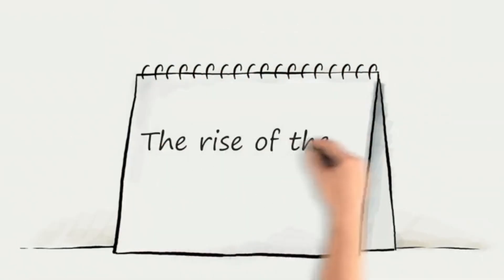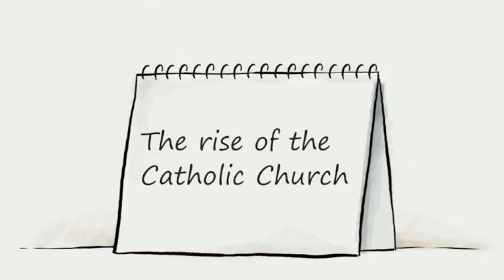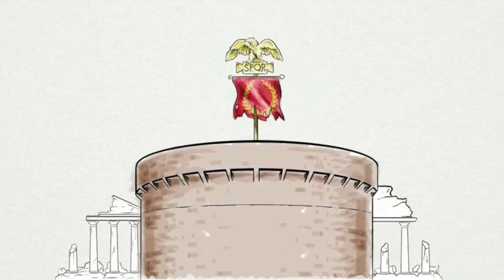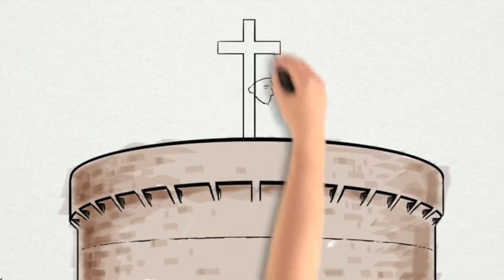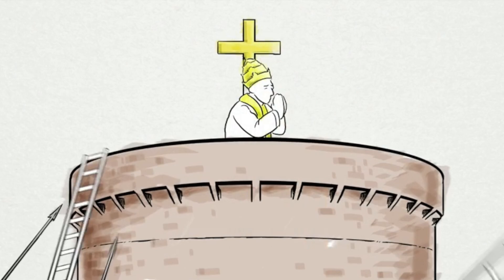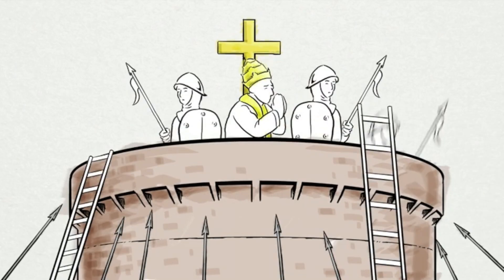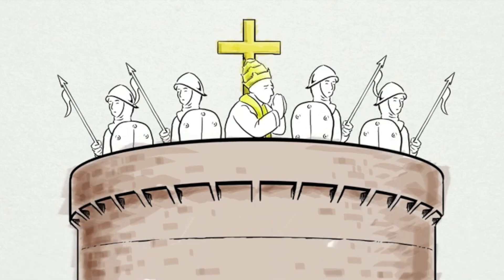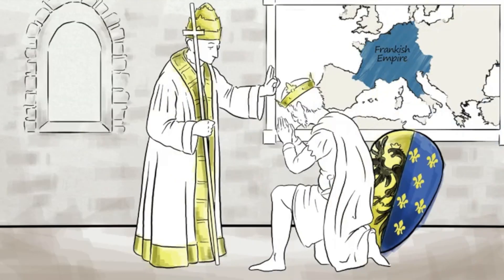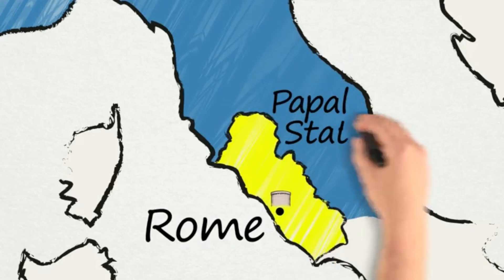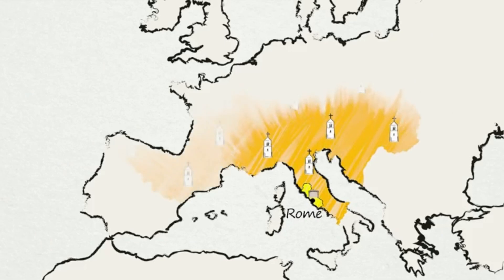The rise of the Catholic Church. After the collapse of the Roman Empire, the bishops of Rome — called popes — struggled to survive recurring invasions. In the sixth century, they established a mutually beneficial alliance with the Frankish Empire. In return for the church's spiritual support, popes received a province around Rome called the Papal States, and Frankish rulers supported the spread of Christianity in Europe.